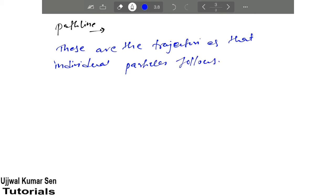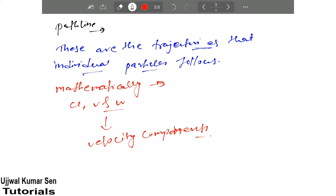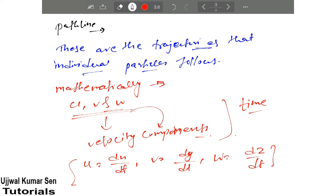If you wanted to write down its meaning in mathematical form, how we can express this? If u, v, and w are velocity components, then we can write: u equals dx upon dt, v equals dy upon dt, and w equals dz upon dt.